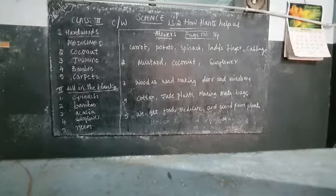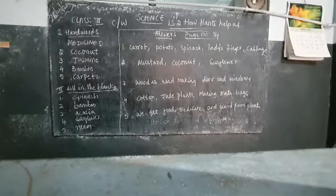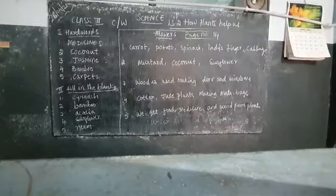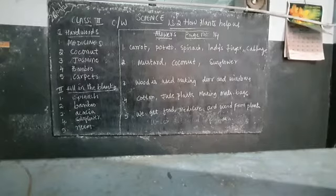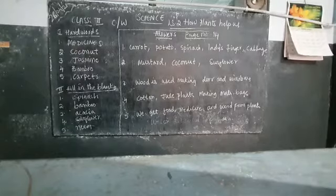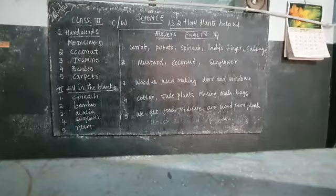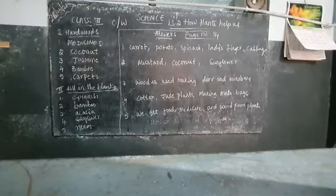First section is hard words. First one: medicine. Second one: coconut. Third: jasmine. Fourth: bamboo. Fifth is carpets.